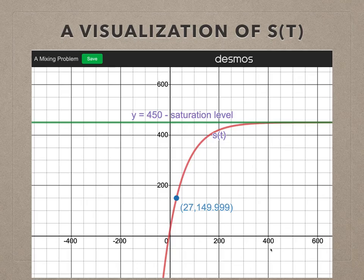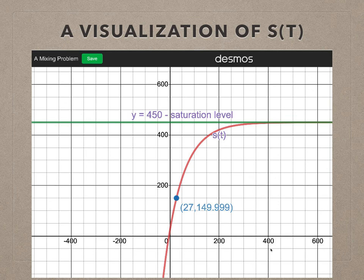Here is the visualization of s. So this is the graph of s, the amount of salt that we found earlier. As we know, this is an exponential function. And this point right here, when t is around 27, the amount of salt is around 150 grams. That is when the concentration is about 1 gram per liter, because the volume of the water is always 150 liters in this problem.